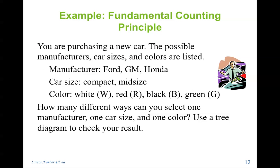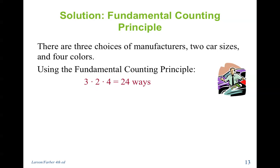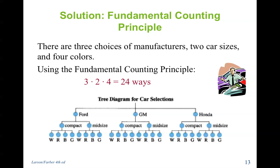You're purchasing a new car. The possible manufacturers, car sizes, and colors are listed. Ford, GM, and Honda. The sizes that you want to look at are compact and midsize, and the colors are white, red, black, or green. So how many different ways can you choose one manufacturer, one car size, and one color? Use a tree diagram to check your results. First, there are three choices for manufacturers, two car sizes, and four colors. So we simply do three times two times four and gives us 24 ways. So then with our tree diagram, we had three manufacturers, Ford, GM, and Honda. We have three sections to begin our tree diagram. Then the Ford, there's two sections after that. Once you make the choice of a Ford, you can choose either compact or midsize. Once you make that selection, there are four colors that can be chosen. So this will give us 24 ways that we can get that car.